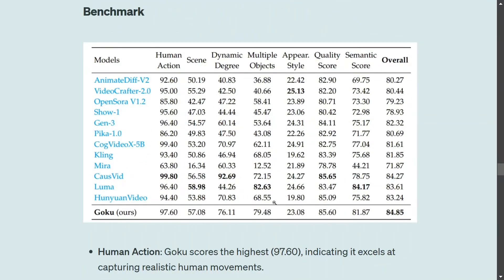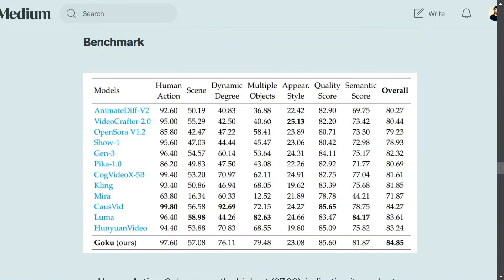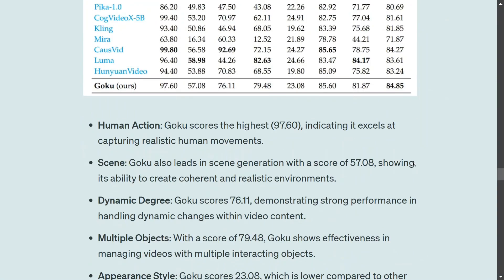Here is the benchmark comparison. The models included are Open Sora, Gen3 from Runway, Pika, Kling, Luma, and Hunyuan Video — one of the best open-source video generation models. If you look at the overall score, Goku's is the highest of all, making it the best video generation model released so far. The overall rating of Goku is the highest compared to all other models in the table.